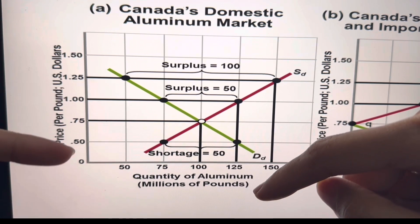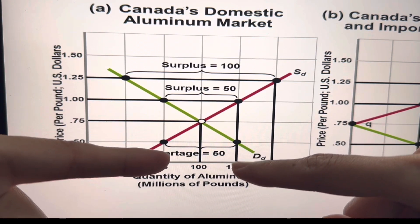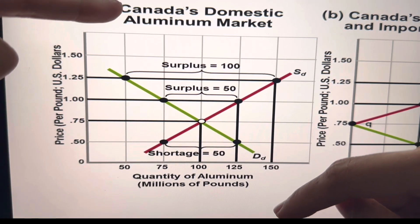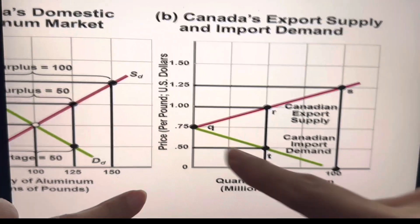So any price lower than $0.75, there's a shortage. So when there's a shortage, what it means is that country needs to import.